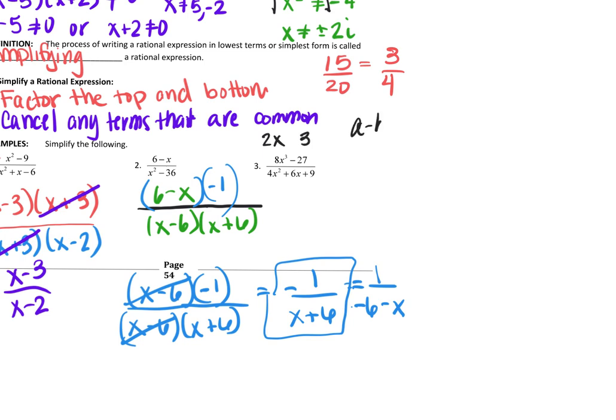So when we factor, the difference of cubes factors as a minus b times a squared minus ab or plus ab plus b squared. So your a here is 2. Your b is 3. So let's watch how this works together. So when we factor this top part, it'll just be 2x minus 3. A minus b.